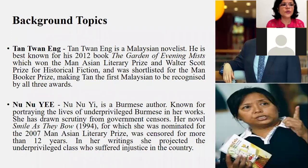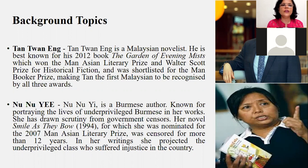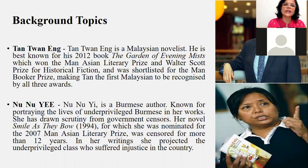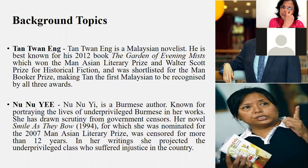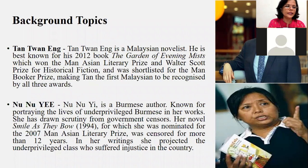Another writer prescribed is Tan Twan Eng, a Malaysian novelist best known for his 2012 book The Garden of Evening Mists, which won the Man Asian Literary Prize and Walter Scott Prize for Historical Fiction, and was shortlisted for the Man Booker Prize — making Tan the first Malaysian to be recognized by all these awards. This paper gives you an opportunity to know about these very young, talented writers who achieved great popularity worldwide.